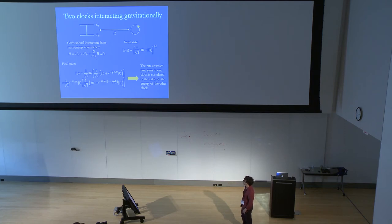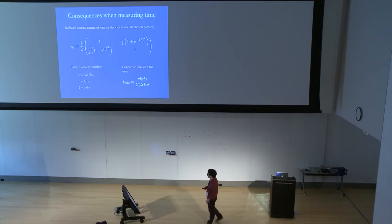This is what I said before, but just in equations. If we have a low energy state, we have a fast clock. If we have a high energy state, we have a slow clock. The rate at which one clock ticks is correlated to the energy of the other clock.